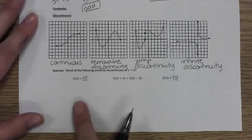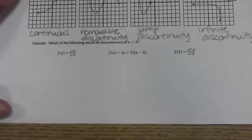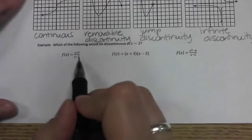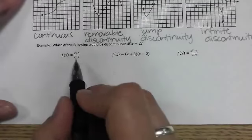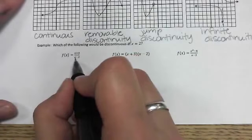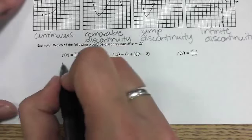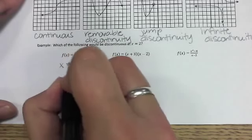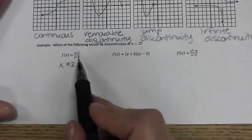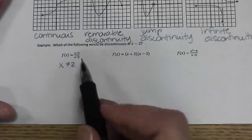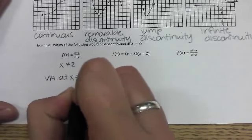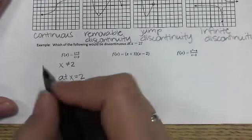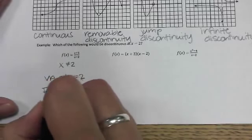For this first example, we have a rational function. We're not allowed to have zero in the denominator, so the x value we can't have is two — x cannot equal two. That creates a vertical asymptote at x equals two. Since it's an asymptote, this would be an infinite discontinuity.